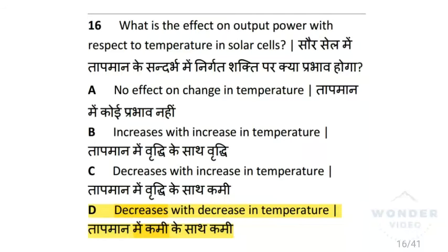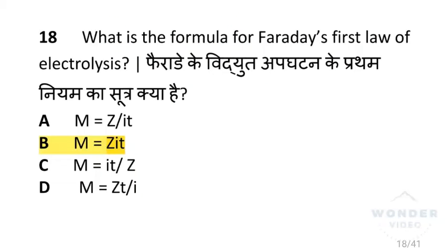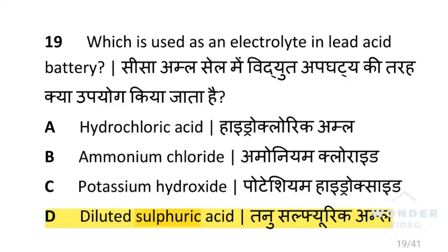What is the effect of output power with respect to temperature in a solar cell? It decreases with decrease in temperature. What purpose is a hydrometer used for during charging of a battery? It determines the specific gravity of the electrolyte. What is the formula for Faraday's first law of electrolysis? That is M is equal to ZIT. Which substance is used as an electrolyte in a lead acid battery? That is diluted sulfuric acid.